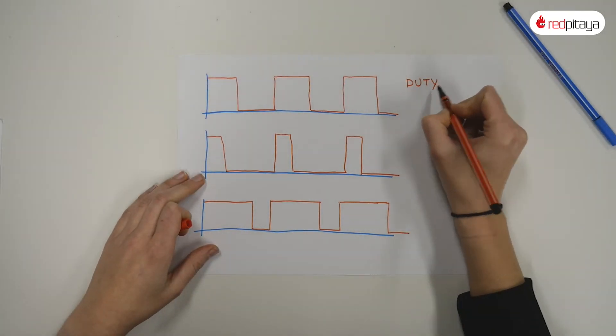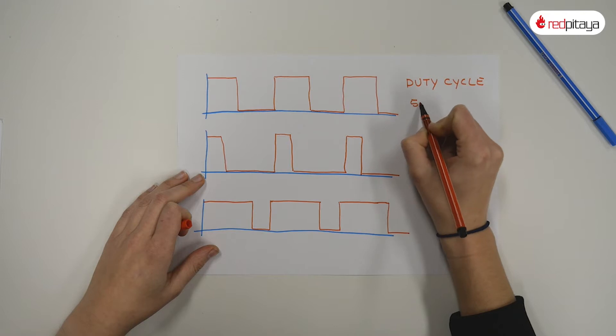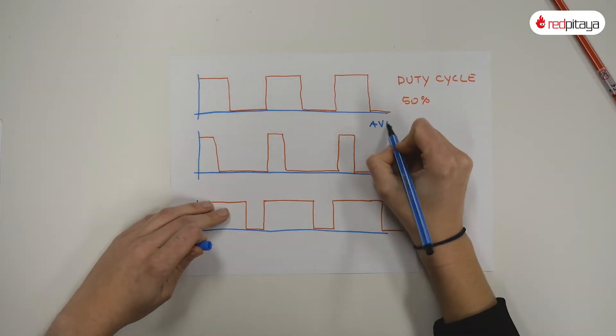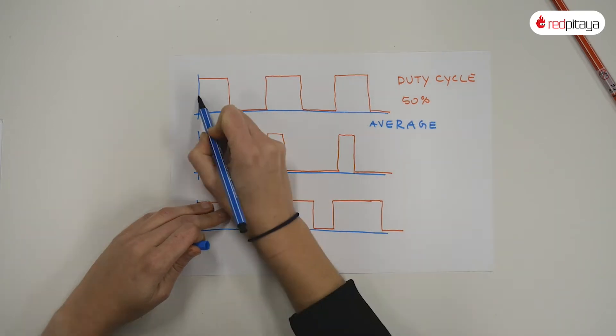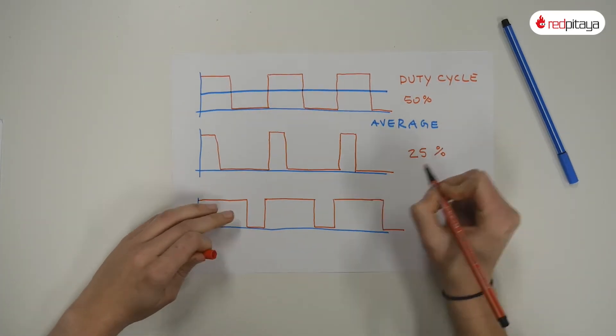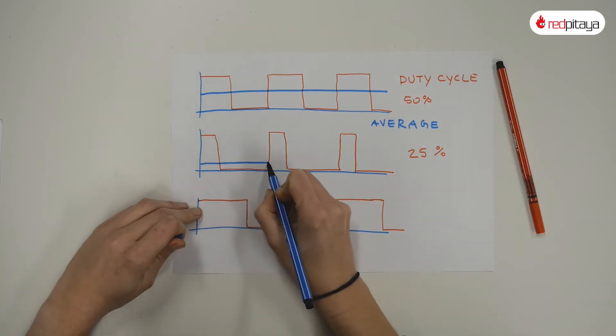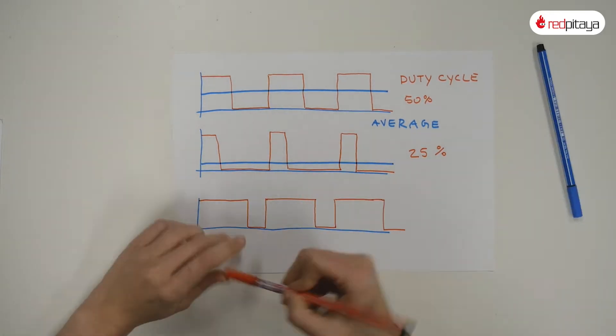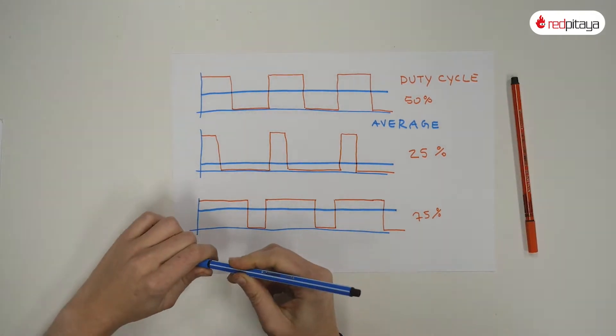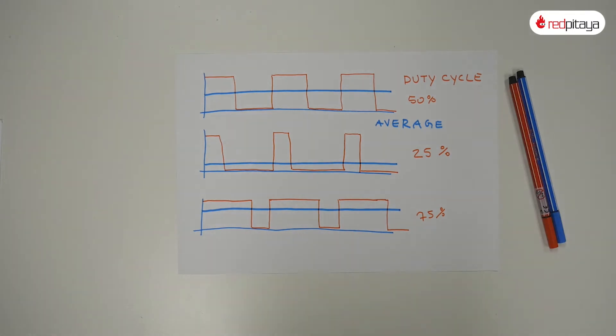At the duty cycle of 50% the device is powered only half of the time. This efficiently splits the power in half. With the duty cycle of 25% average power output is a quarter of the nominal value, and with the duty cycle of 75% average power will be at three quarters of the nominal output.